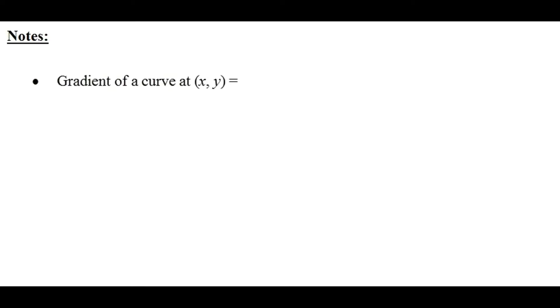I have a couple of notes to make. These notes will help us understand the next example. If you see the term 'gradient of a curve at x, y', remember the general gradient of a curve at the point x, y implies dy over dx. We've seen that concept in a differentiation video, and I'll provide a link to that video in the description below.